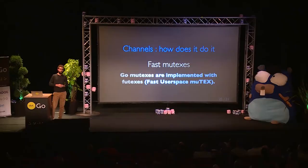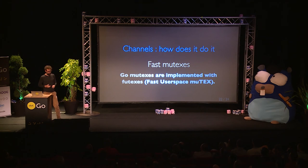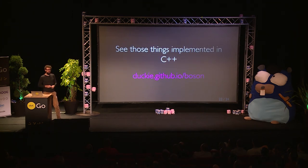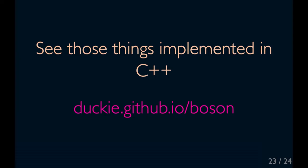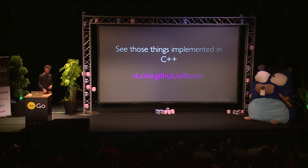The mutexes in Go are really fast because they are implemented with futexes. If you want to see some of these things implemented in C++, you can go over to this project and discover how you can implement this. Thank you for listening. Have a nice day.